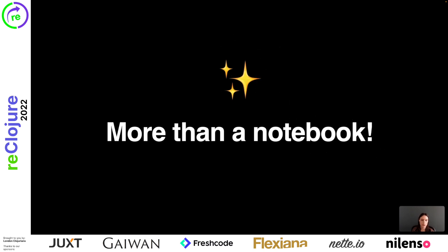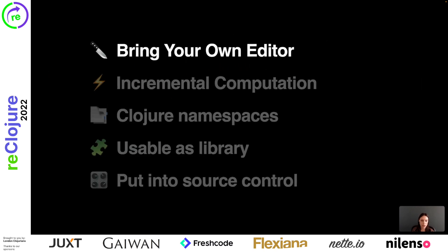Let's take a look at the most obvious differences. First, Clerk is not a 'what you see is what you get' or rich text editing environment. You can look at Clerk as your programming buddy, if you will, living side by side with your editor. You write your Clojure namespaces in your editor of choice and Clerk will evaluate them. And Clerk is very fast at this, which brings me to one part of this talk's title: Live Programming.